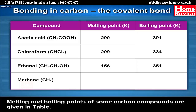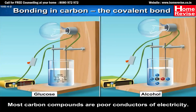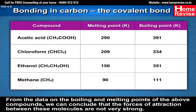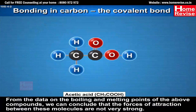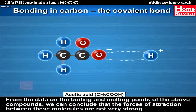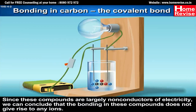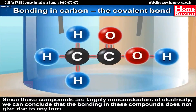Methane (CH₄) has a melting point of 90 K and boiling point of 111 K. Most carbon compounds are poor conductors of electricity. From the data on the boiling and melting points of the above compounds, we can conclude that the forces of attraction between these molecules are not very strong. Since these compounds are largely non-conductors of electricity, we can conclude that the bonding in these compounds does not give rise to any ions.